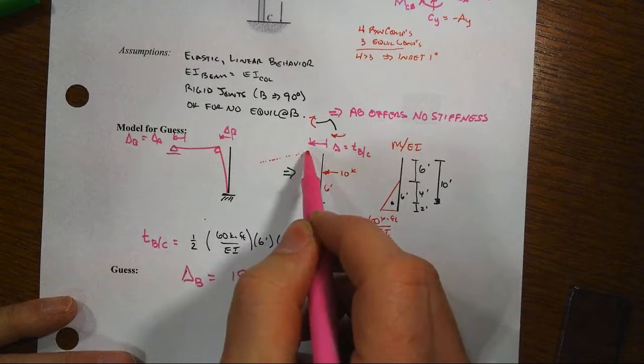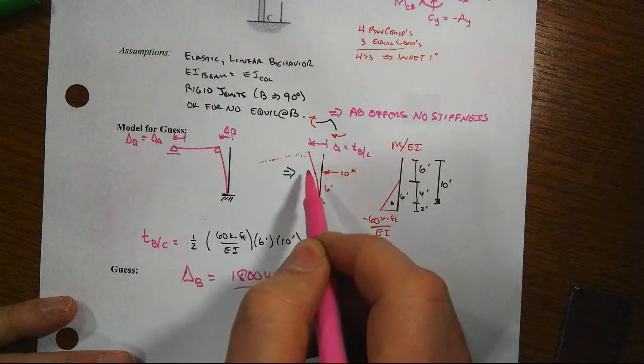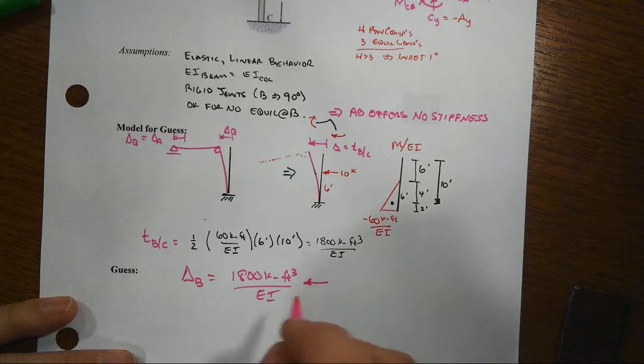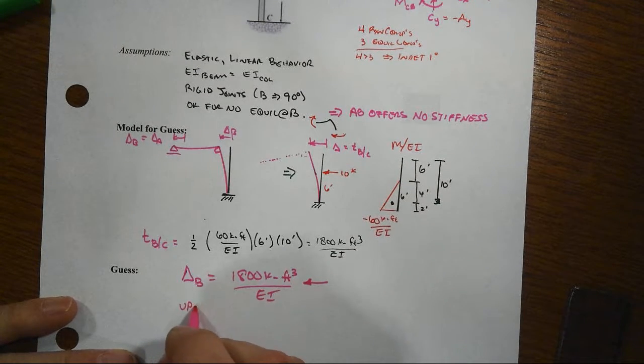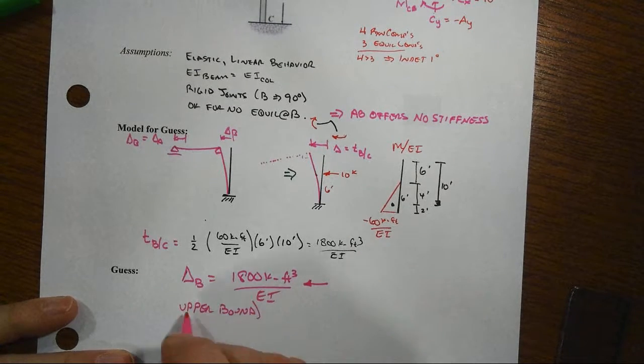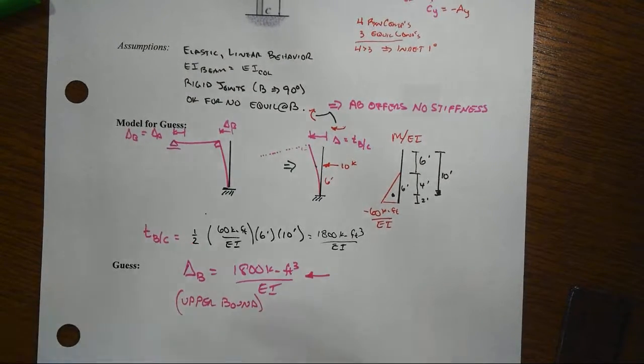I've got to bend it to get back up and that's going to induce curvatures in the column. And that will probably actually make the frame sway back to the right. So I think this is going to be an upper bound answer. I don't know, I could be wrong. We'll see what happens in later steps.